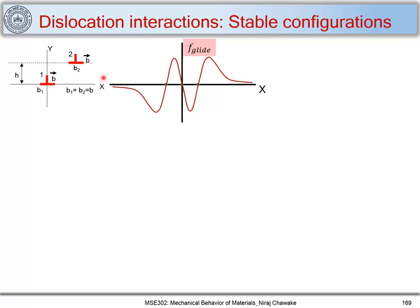Now let's find out what are the stable configurations of these dislocations when they interact with each other. From the glide force versus x plot, we can see that there are three points where the glide force tends to zero. These three points are x equal to h, x equal to zero, and x equal to minus h.